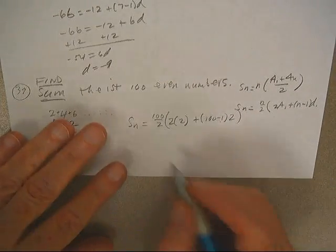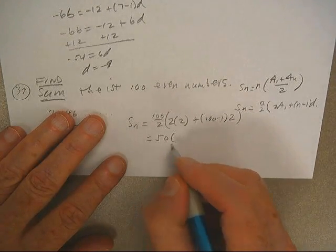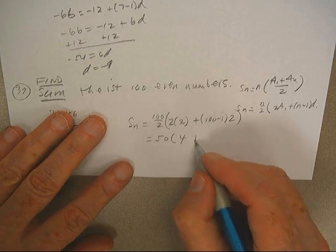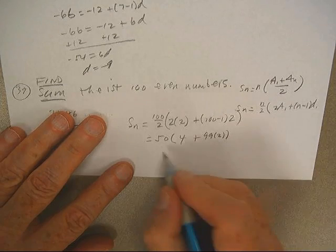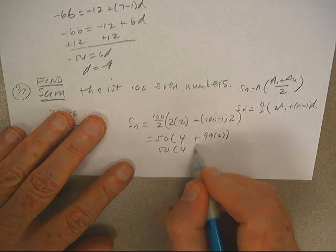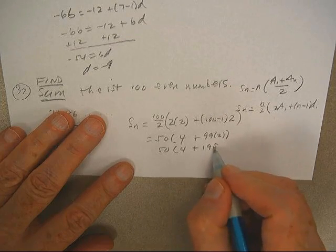Then all I've got to do is calculate that. Well, that's fifty, this is four, this is ninety-nine doubles, four plus one hundred and ninety-eight,